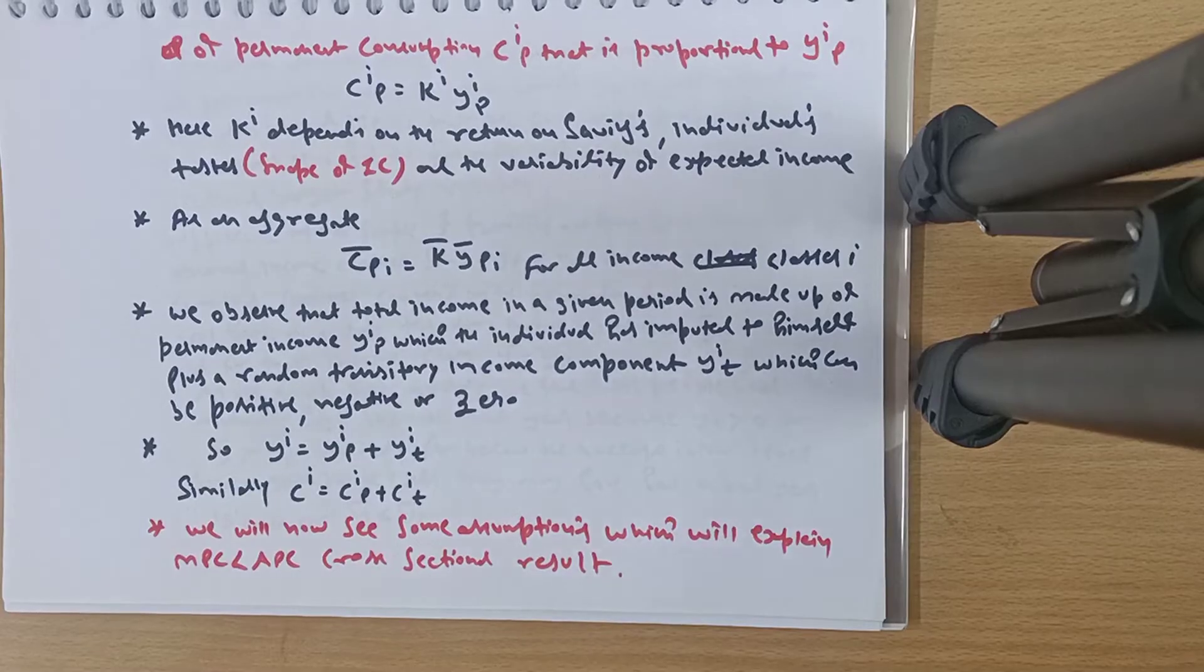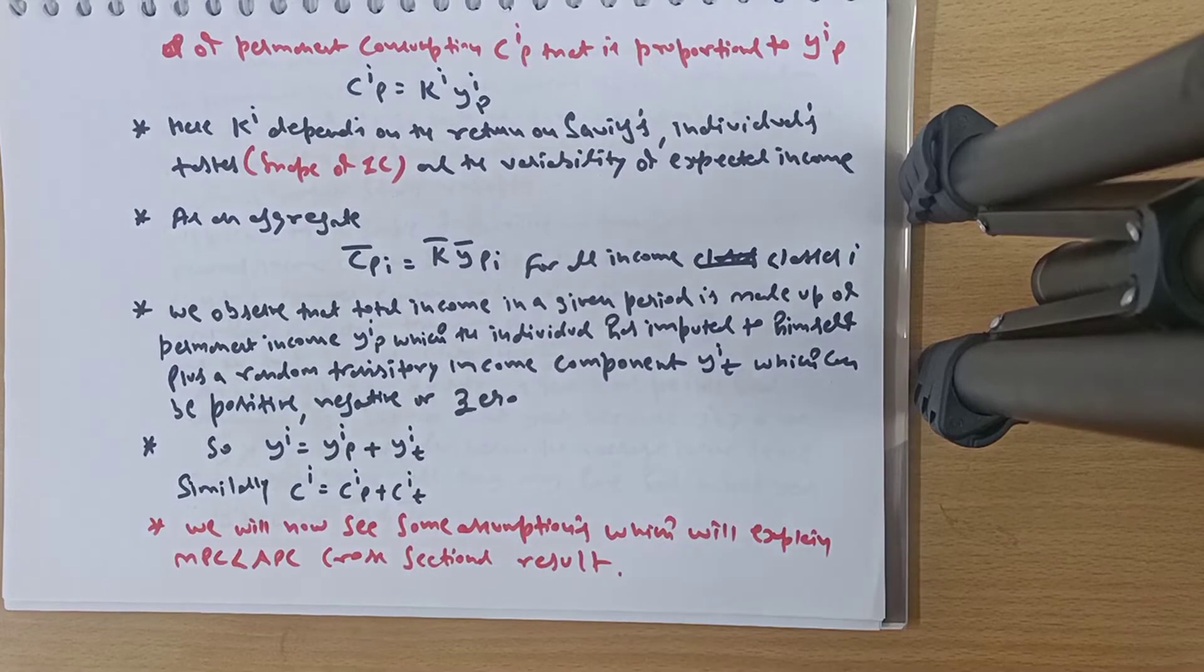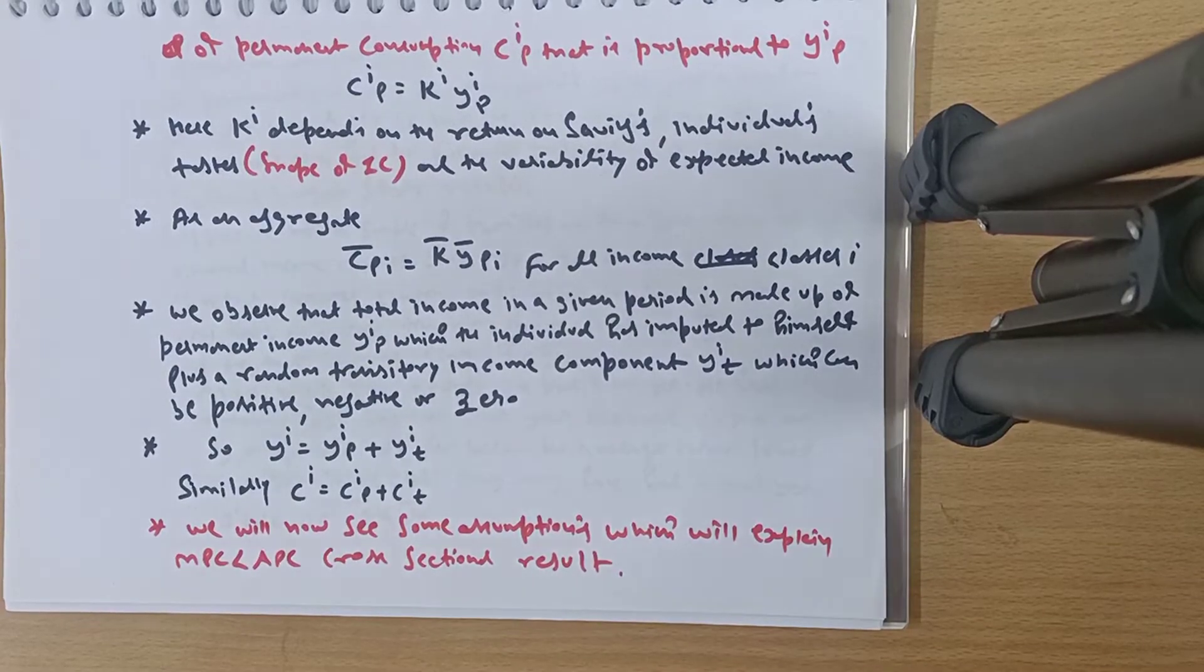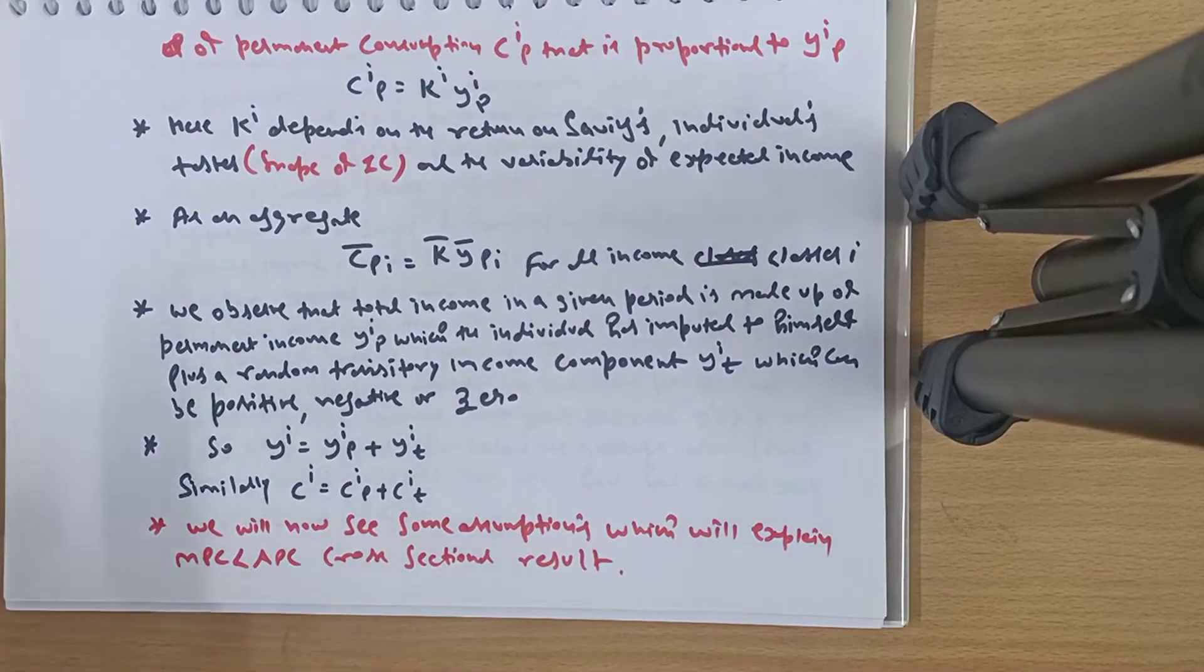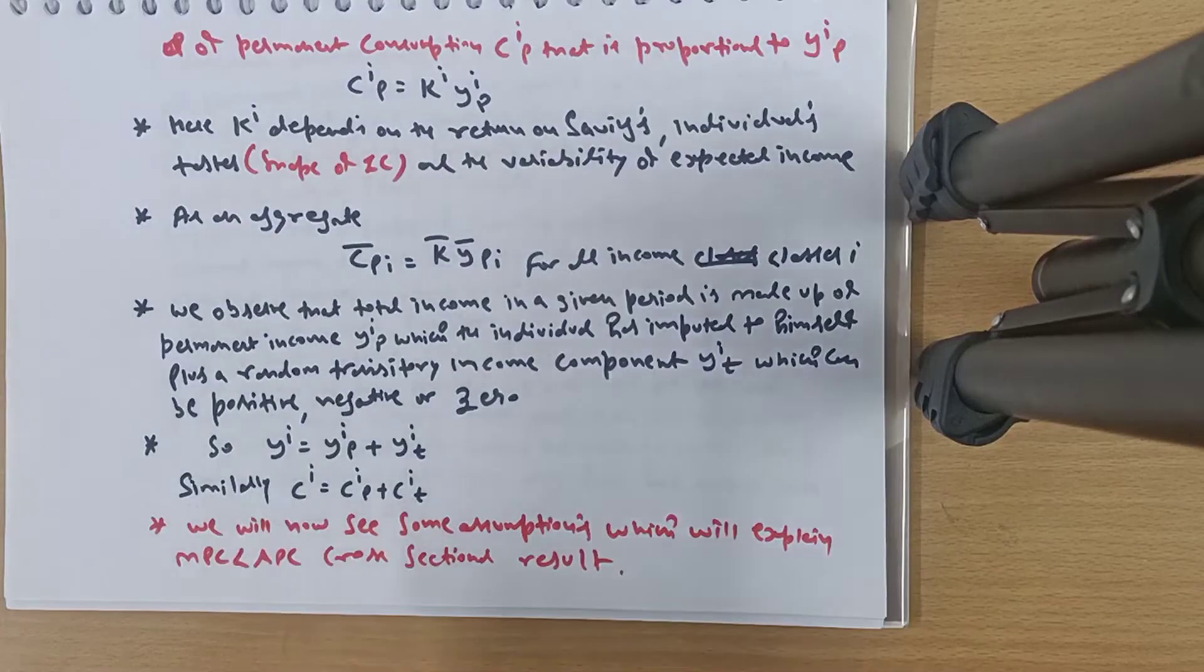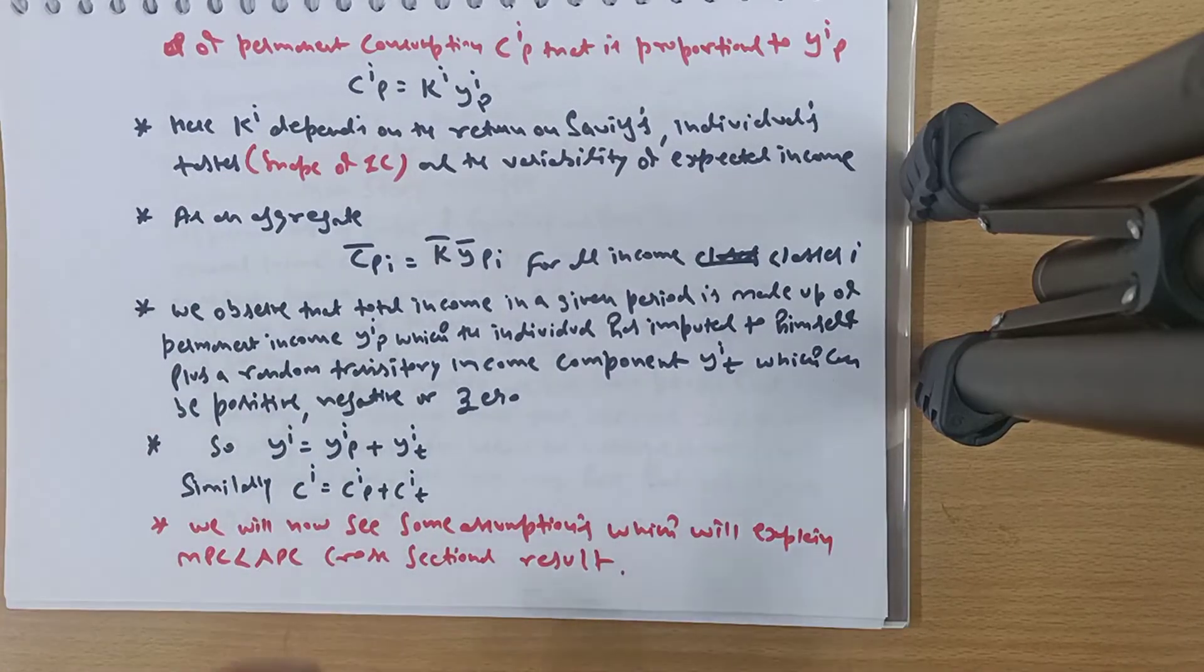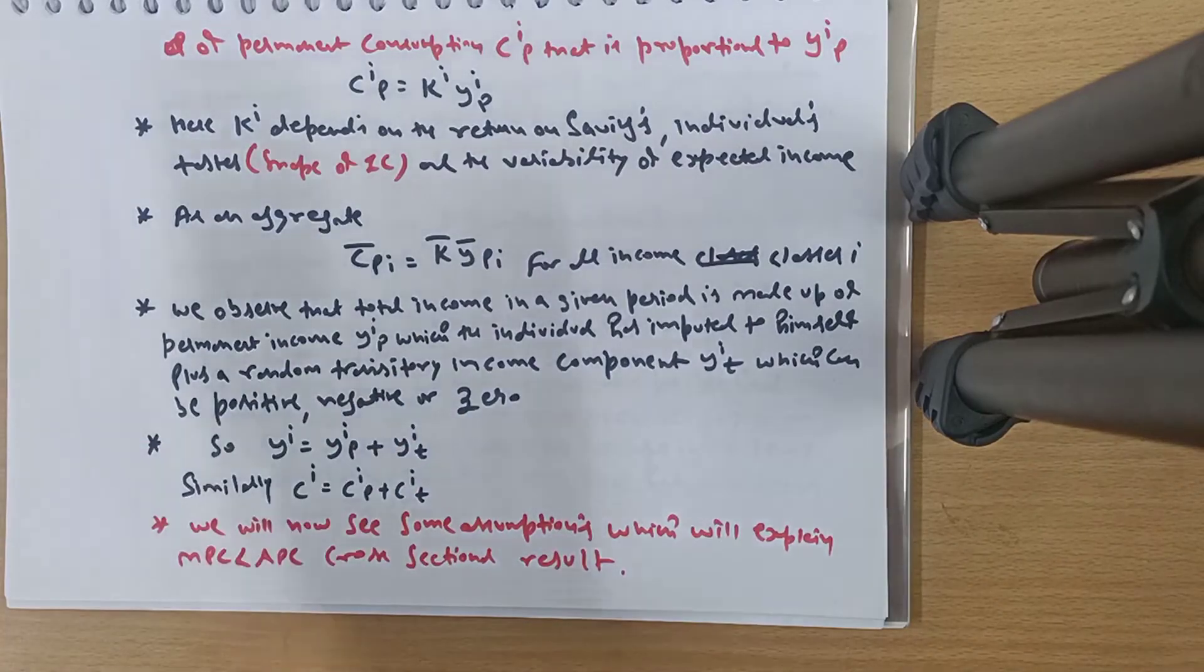The point here is that the individual assumes his permanent income is 10,000. If some transitory element causes his income to rise to 13,000, he knows that in the long run he will earn 10,000. Or if some short-run loss reduces his income to 9,000, he knows that over a period of time he will come back to the average of 10,000. Therefore, we are saying that the transitory element, which is random, can be positive (if earning 13 instead of 10), negative (if earning 9 instead of 10), or zero (if earning exactly 10).